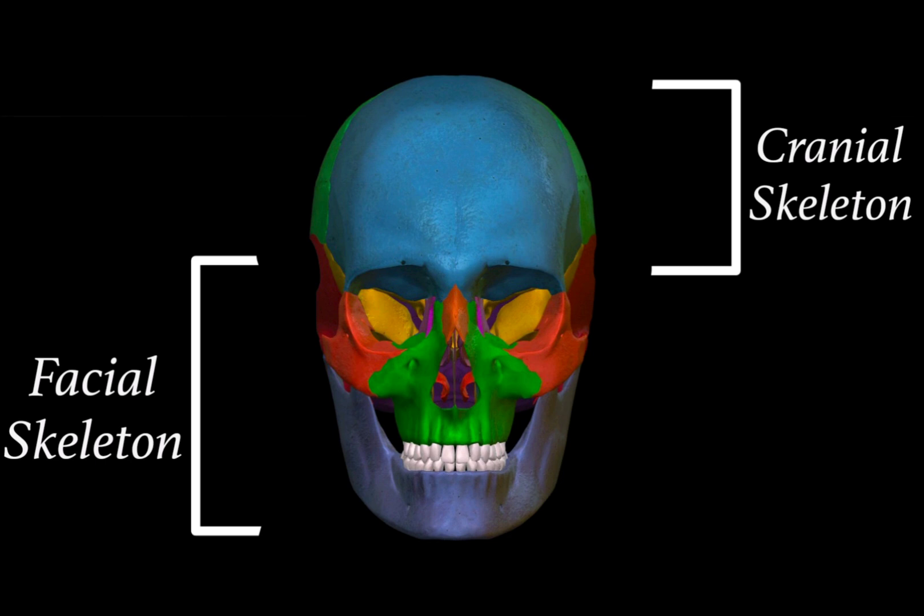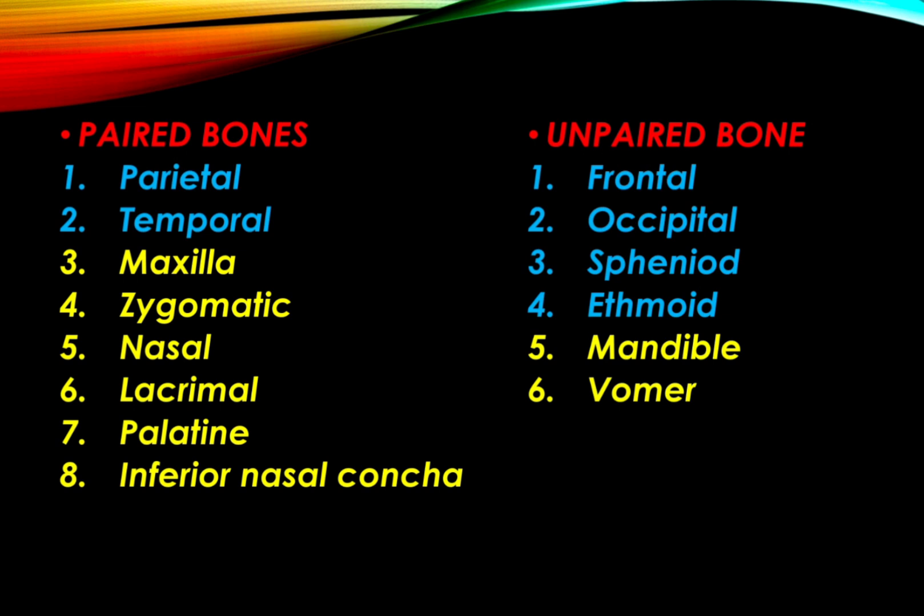The bones of the skull are divided into paired and unpaired bones. Note that bones written in blue are bones of the cranial skeleton and bones written in yellow are bones of the facial skeleton. Paired bones include the parietal bone, temporal bone, maxilla, zygomatic, nasal, lacrimal, palatine, and inferior nasal concha. Unpaired bones include the frontal, occipital, sphenoid, ethmoid, mandible, and vomer.